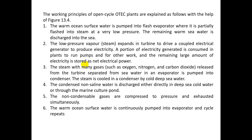The working principle proceeds as follows: initially, warm sea water is pumped into the flash evaporator where it is partially flashed into steam at very low pressure, with the remaining water discharged back to the sea. Second, this low pressure steam expands and hits the turbine, generating electricity. A portion of the generated electricity is consumed within the plant to run the pumps and other equipment. The steam may also carry non-condensable gases such as oxygen, nitrogen, or carbon dioxide, which are separated from the turbine.